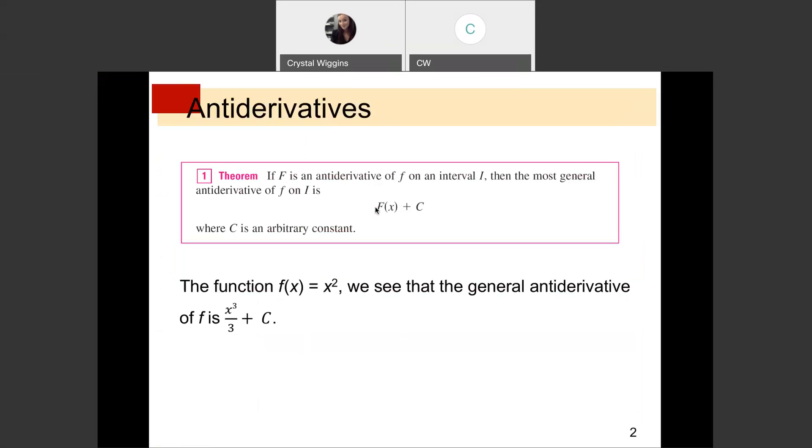If F, capital F, is an antiderivative of some function, lowercase f, on some interval i, then the most general antiderivative of F on this interval is the antiderivative capital F of X plus a constant. Now, that constant is going to always be C. It is never going to be a number, because if we take a derivative of a function that has a constant, that derivative is 0, which means when we look at the derivative, we don't know if there was a constant tacked on to the end of the original function. There's no way to know because the derivative went to 0. So we just write C to represent any constant that could be on the function and affect a lot of the interpretations and applications.